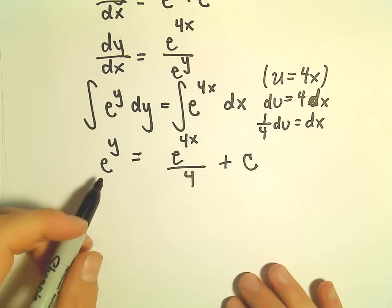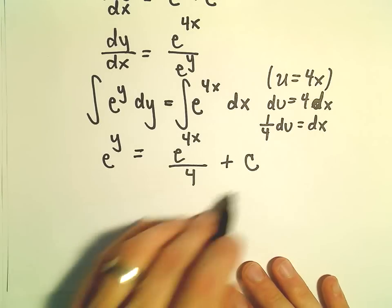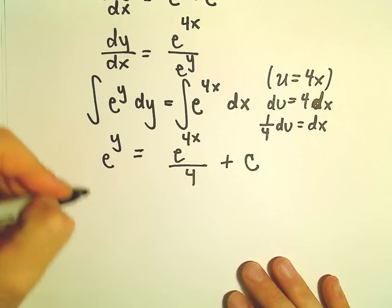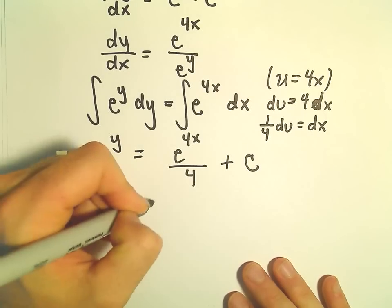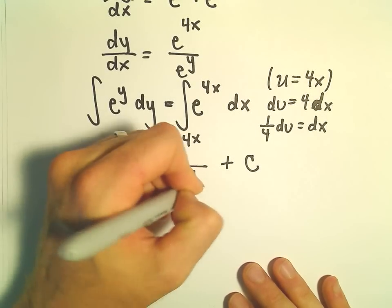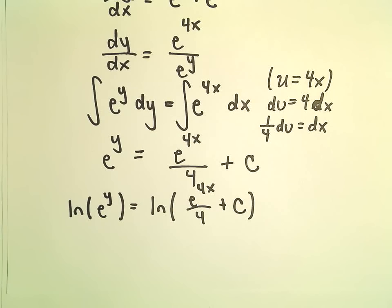At this point, we can solve for y by taking the natural logarithm of both sides. If we take the natural logarithm of the left side, we can take the natural logarithm of the right side as well.